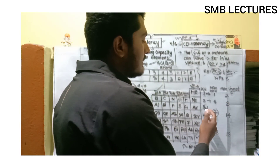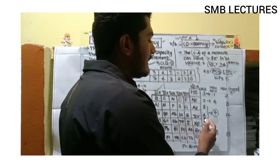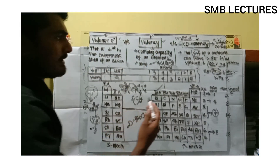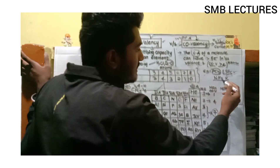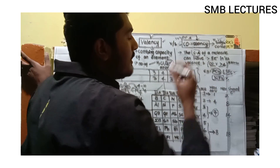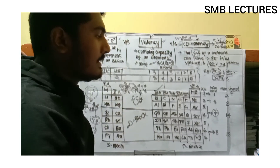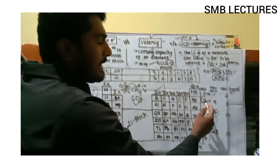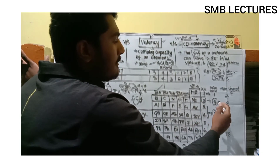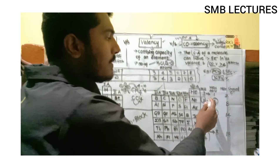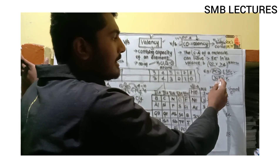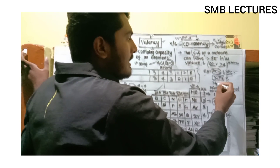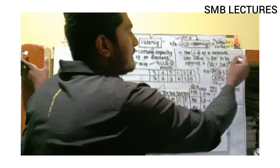In the third period and fourth period the maximum covalency is seven. Everyone will have a doubt: why will nitrogen not combine with five molecules of fluorine to form NF₅? Because nitrogen belongs to the second period, and for the second period the maximum covalency is four. That is why it cannot bind with five fluorine atoms.